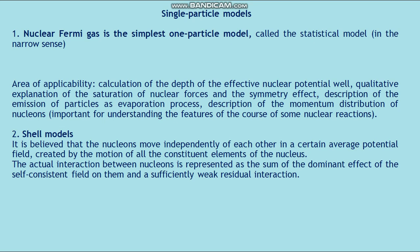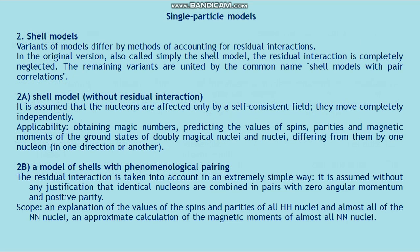Second: shell models. It is believed that nucleons move independently of each other in a certain average potential field created by the motion of all constituent nucleons. The actual interaction between nucleons is represented as the sum of the dominant self-consistent field and a sufficiently weak residual interaction. Variants of shell models differ by their methods of accounting for residual interactions. In the original version — simply the shell model — the residual interaction is completely neglected. The remaining variants are united under the name shell models with pair correlations.